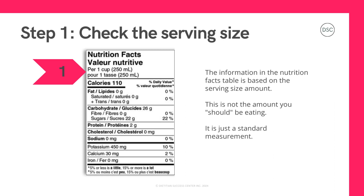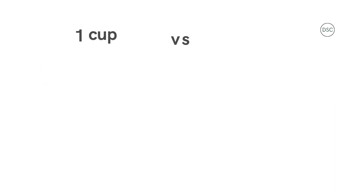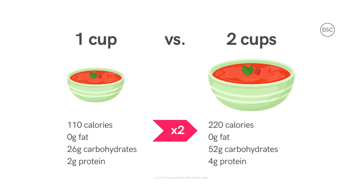In this example, one cup of this food has 110 calories, zero grams of fat, 26 grams of carbohydrates, 2 grams of protein, and so on. Keep in mind the serving size listed might be less or more than you would eat. So if you're going to eat double the serving size, you'll have to double all of the values in the table. For example, if the serving size says one cup but you are going to eat two cups, 110 calories becomes 220 calories.